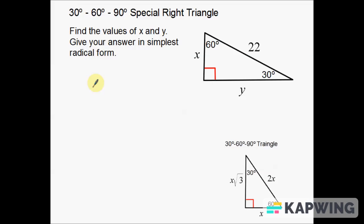Looking at this triangle for the first example, the only side they give me is my hypotenuse — this 22 right here. If I go down to my little cheat sheet, my hypotenuse is right here. Now whenever you're looking at a 30, 60, 90 triangle, the one side you always want to try to find first is your short side, your short leg. This x down here is the one that you should find first.